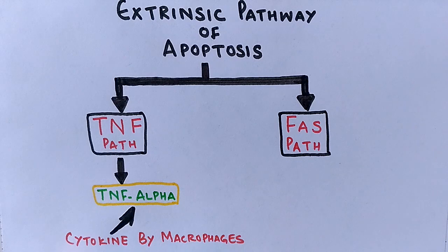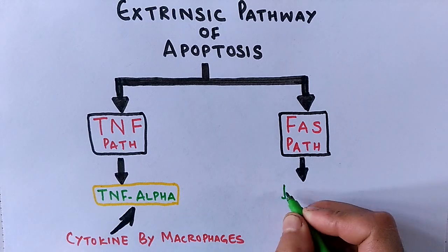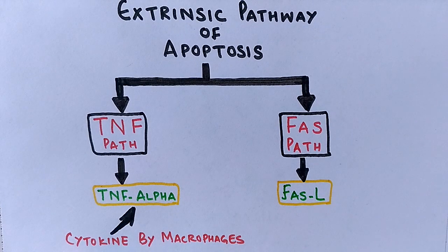On the other hand, we have the FAS path, which is the first apoptosis signal pathway. In this pathway, the FAS ligand protein acts as the extracellular apoptotic signaling molecule which initiates extrinsic apoptosis.